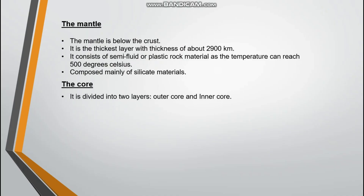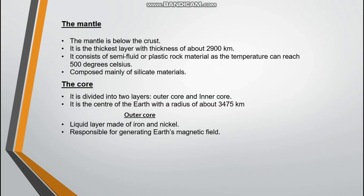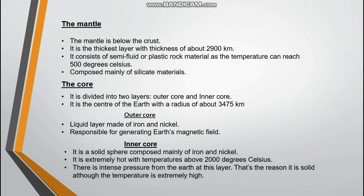The core is divided into two layers: outer core and inner core. It is the center of the earth with a radius of about 3,475 kilometers. The outer core is a liquid layer made of iron and nickel, responsible for generating earth's magnetic field. The inner core is a solid sphere composed mainly of iron and nickel. It is extremely hot with temperatures above 2,000 degrees Celsius. Someone might ask why it is solid if temperatures are so high — the reason is the intense pressure from the earth at this layer keeps it solid.